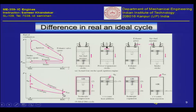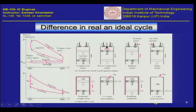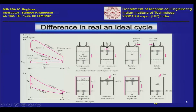The first difference between this cycle shown at the bottom and the cycle at the top — which is a sort of a real cycle I have tried to depict here — is that this real cycle, as you can clearly see, looks considerably different than the ideal cycle.